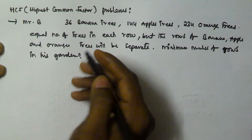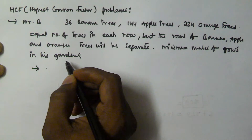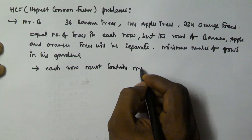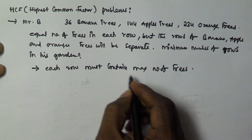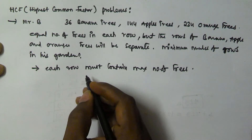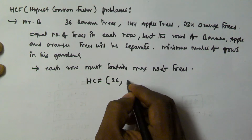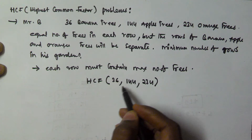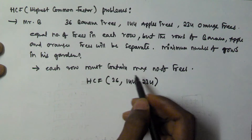To find the minimum number of rows, each row must contain the maximum number of trees. The maximum number of trees in each row is given by the HCF of the total tree counts — that is, HCF of 36, 144, and 234 — and this will give the number of trees in each row.